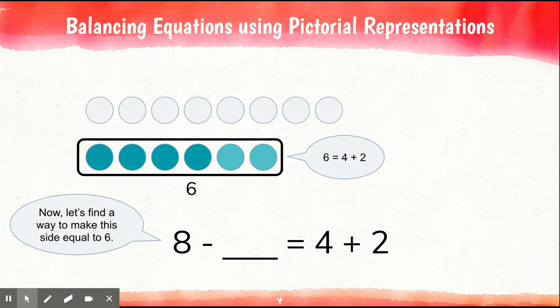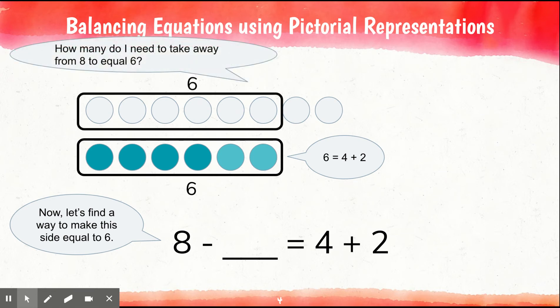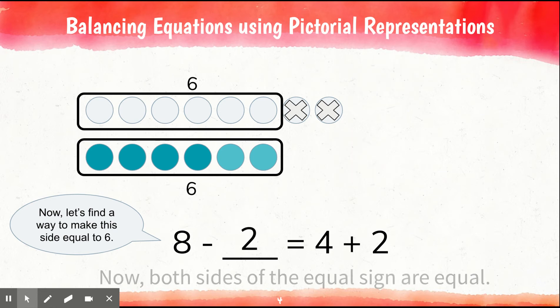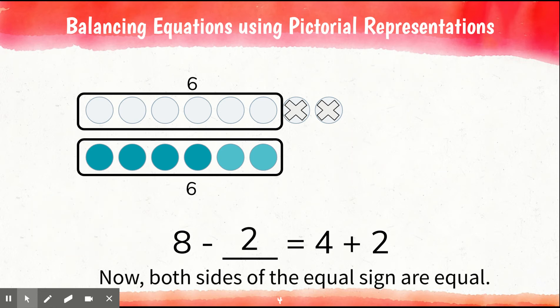Here are 8 gray counters. How many do we need to take away from 8 to equal 6? Right, we need to take 2 away. So 8 minus 2 is equal to 6. Now both sides of the equal sign are equal. This is another balanced equation.